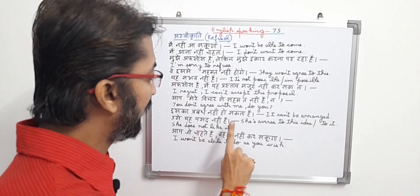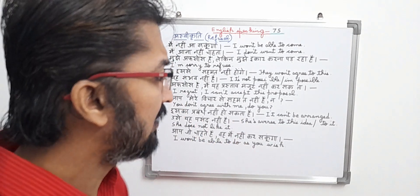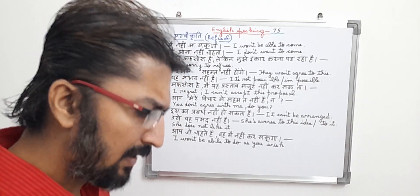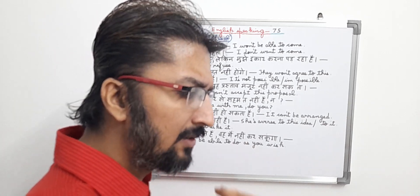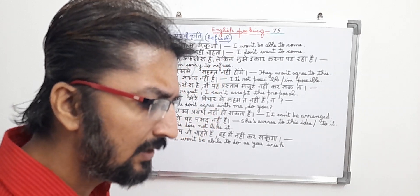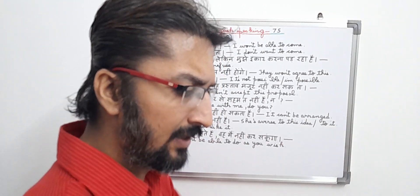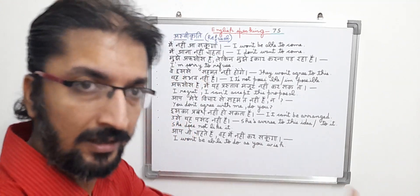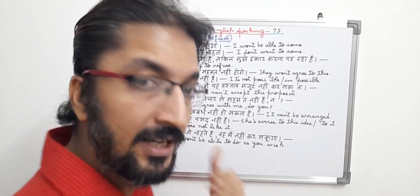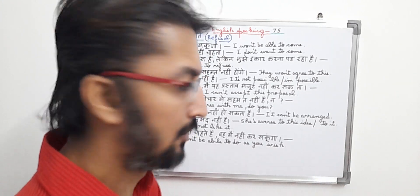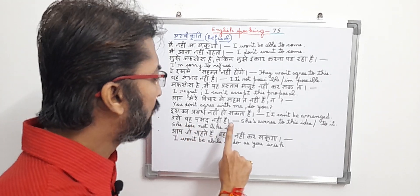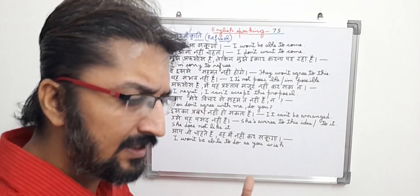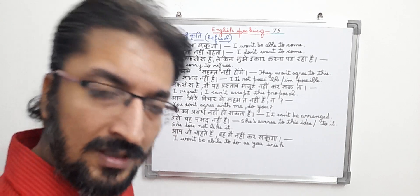In English, it means: it can't be arranged. The person is clearly refusing — saying it can't be arranged. There is something that needs to be arranged, but he is saying it can't be arranged immediately. So he's clearly refusing to arrange that thing. This is clearly a refusal type sentence.